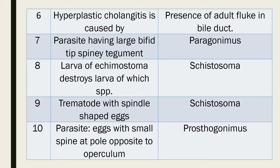Question 6: Hyperplastic cholangitis is caused by which answer? The answer is presence of adult fluke in the bile duct. The adult fluke resides in the gallbladder duct, develops there, sometimes blocks it, and produces inflammation. Question 7: Parasite having large bifid tip spiny tegument — the tegument has spines that are large and bifid at the tip. Answer: Paragonimus.